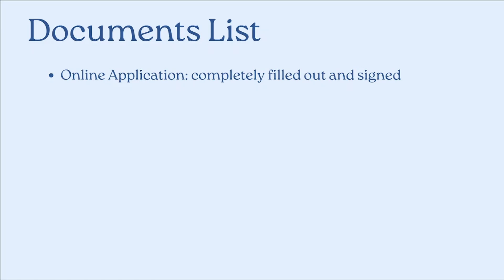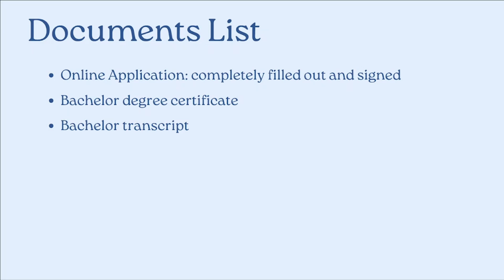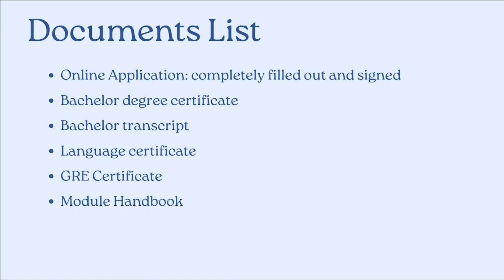The documents you need to upload on the application portal are: first, a completely filled and signed online application form; second, your bachelor's degree certificate — if not yet available, a provisional certificate showing expected completion before the start of your master's degree is acceptable; third, your bachelor's transcript showing subjects studied, grades, semesters completed, and the university's grading system; fourth, your language certificate; fifth, your GRE certificate; and sixth, your module handbook, usually available as a PDF on your university's website.